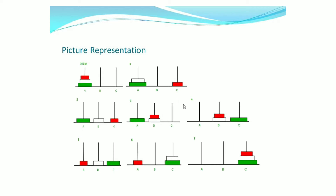In step 4, we are moving the final largest disk from rod A to its destination rod C. In step 5, we are again moving the smallest disk from rod B to rod A. In step 6, we are moving the second largest disk from rod B to its destination rod C. In the final step, we are again moving the smallest disk from rod A to its destination rod C.